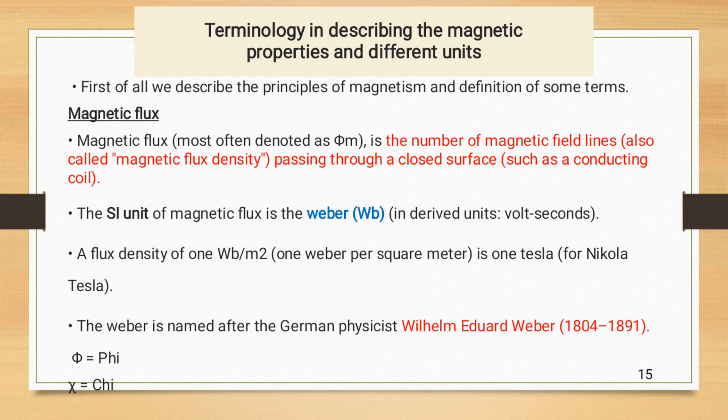A flux density of one Weber per meter square is one Tesla. The Weber is named after a German physicist, Wilhelm Eduard Weber, 1804-1891.